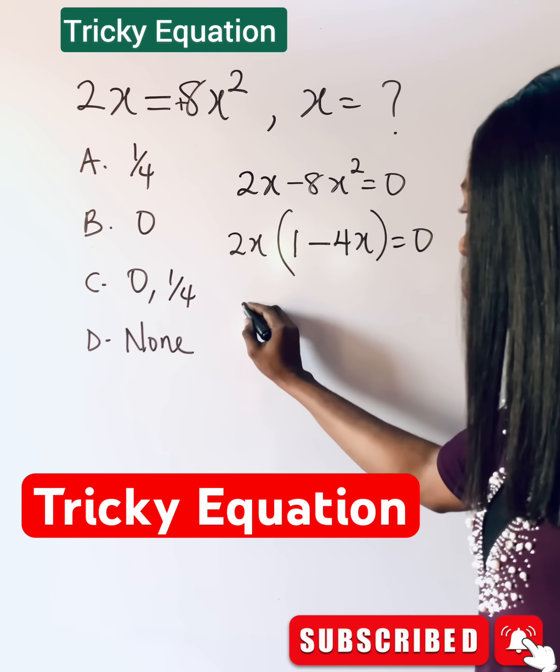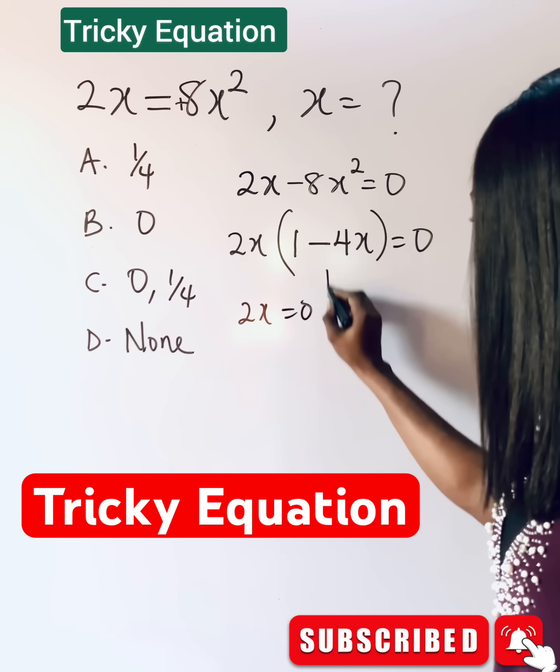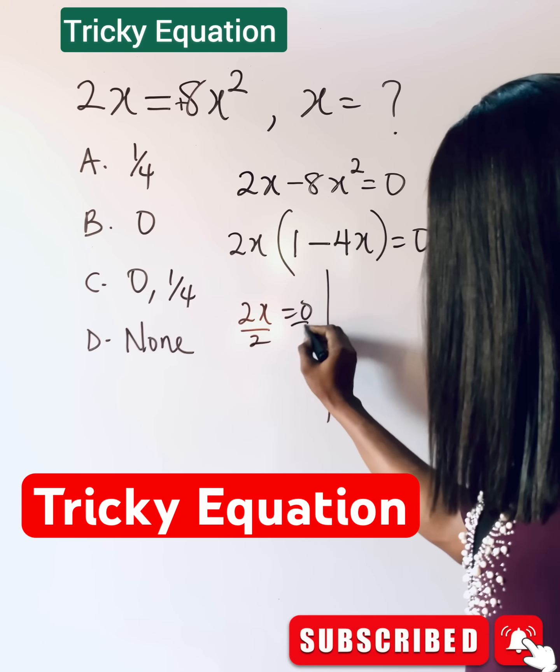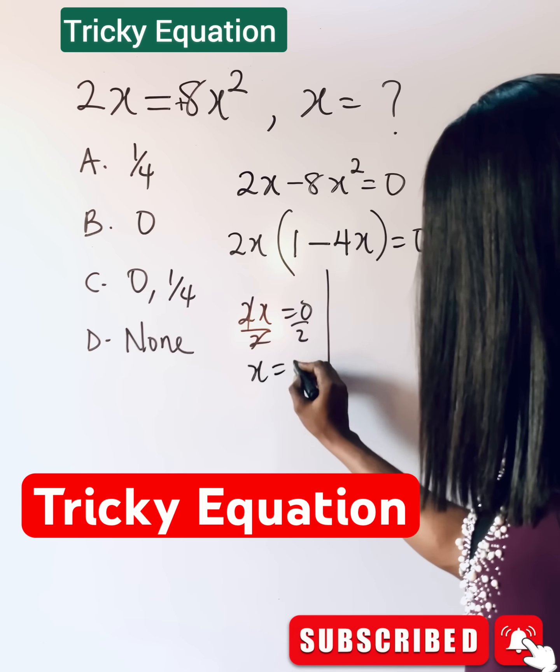So what do you do? It means 2x is equal to 0, and divide by 2. So you have x is equal to 0.